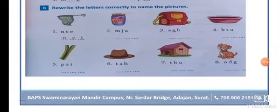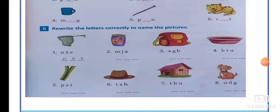Fifth one is a zip. Z, I, P, zip. Sixth one is a hat. H, A, T, hat. The seventh one is a hut. H, U, T, hut. And eighth one is a dog. D, O, G, dog.